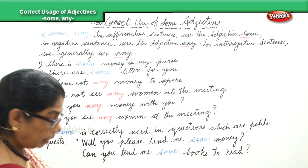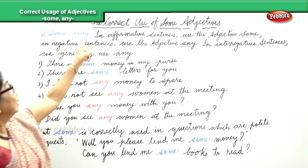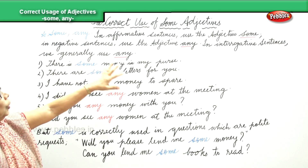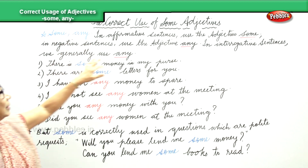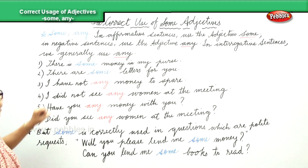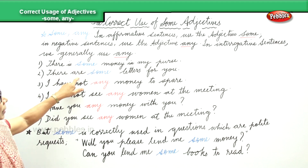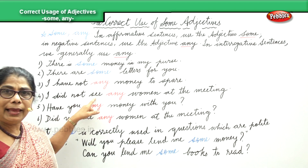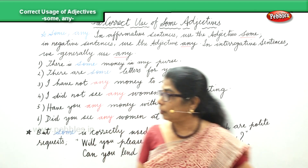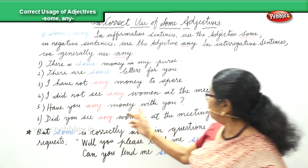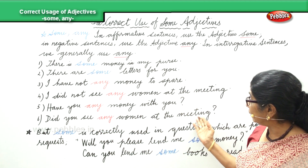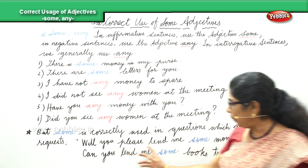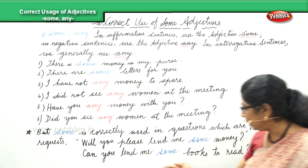To recap: we use adjective 'some' in affirmative sentences. In negative sentences we use 'any.' In interrogative sentences we generally use 'any.' Examples: 'There is some money in my purse.' 'There are some letters for you.' 'I have not any money to spare.' 'I did not see any women at the meeting.' 'Have you any money with you?' 'Did you see any women at the meeting?' But 'some' is correctly used in polite requests: 'Will you please lend me some money?' 'Can you lend me some books to read?'